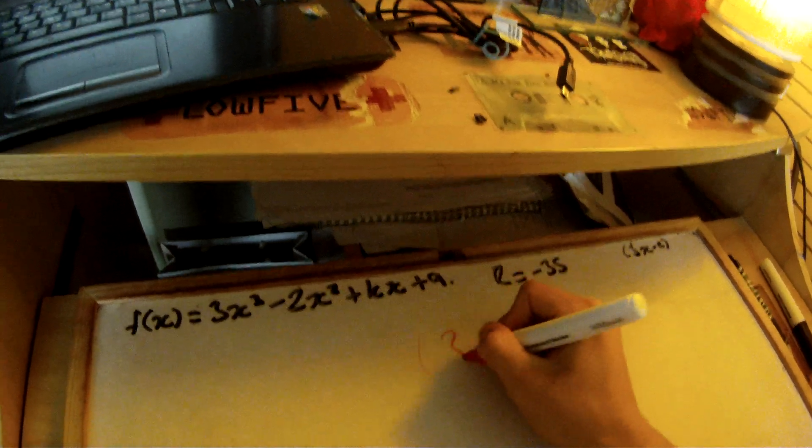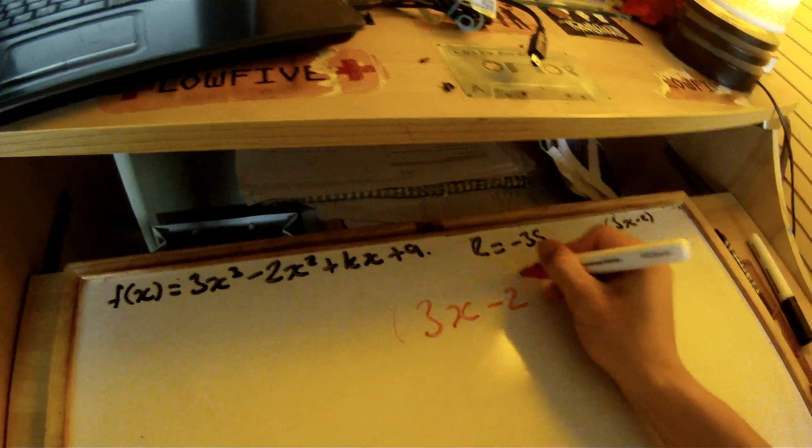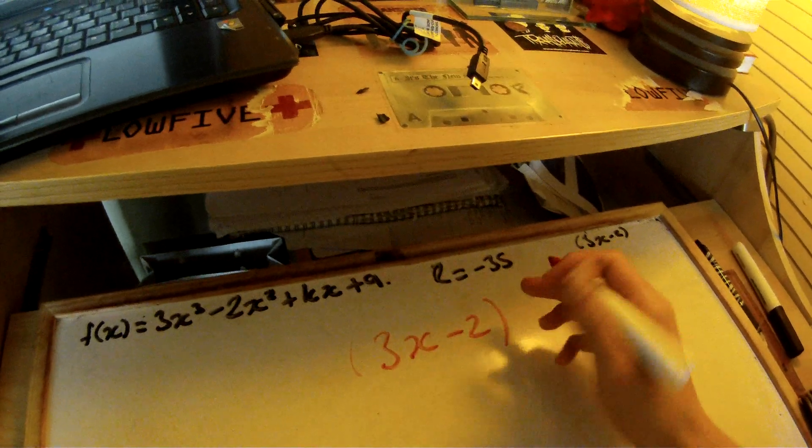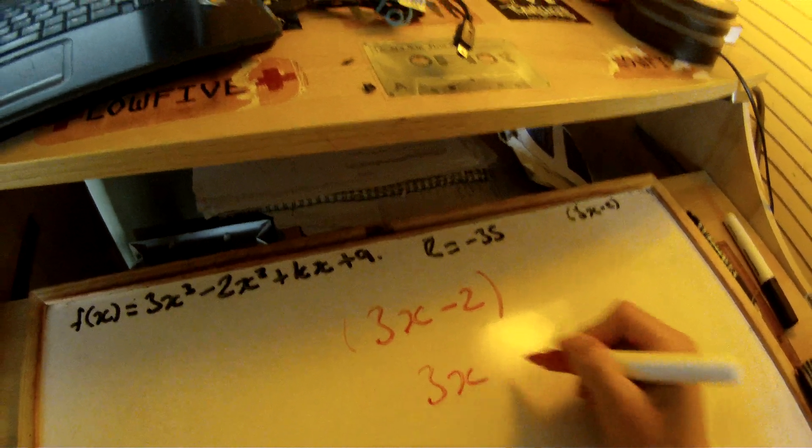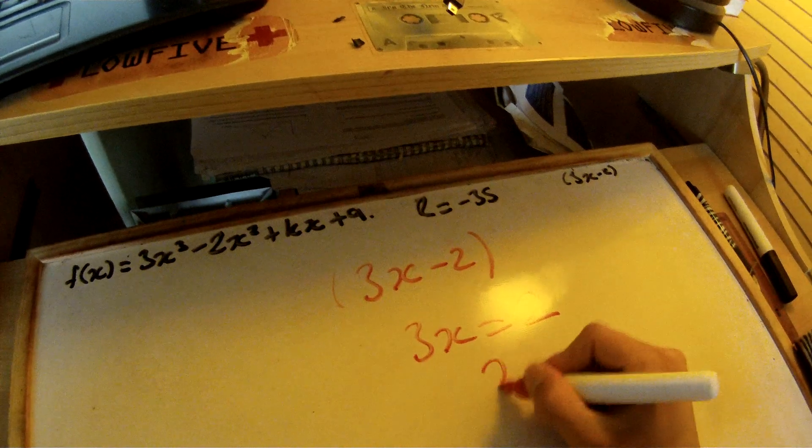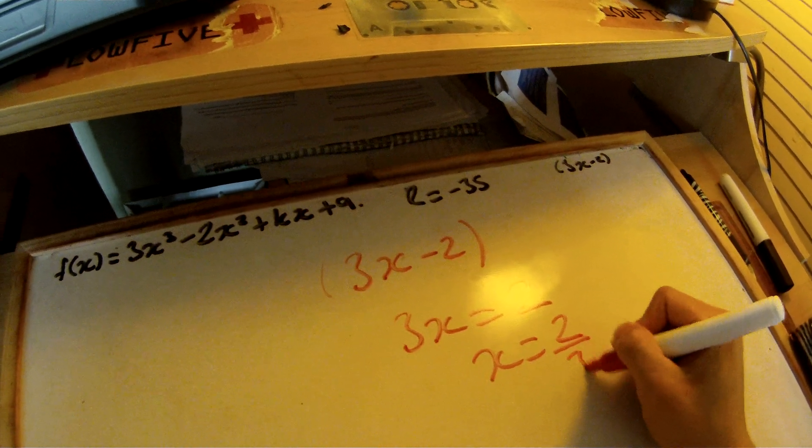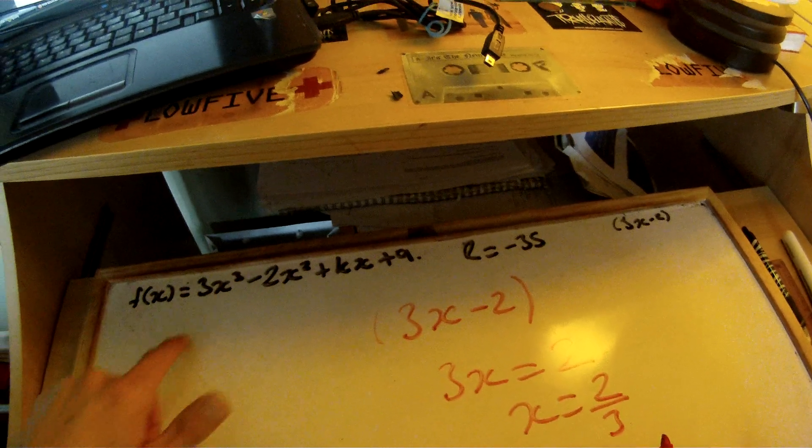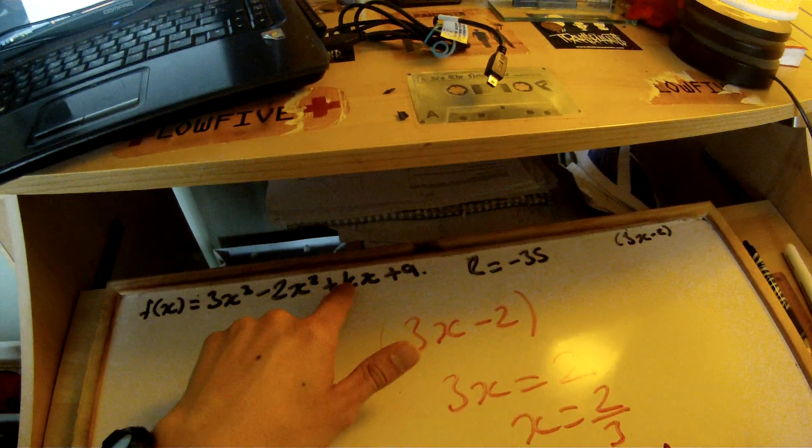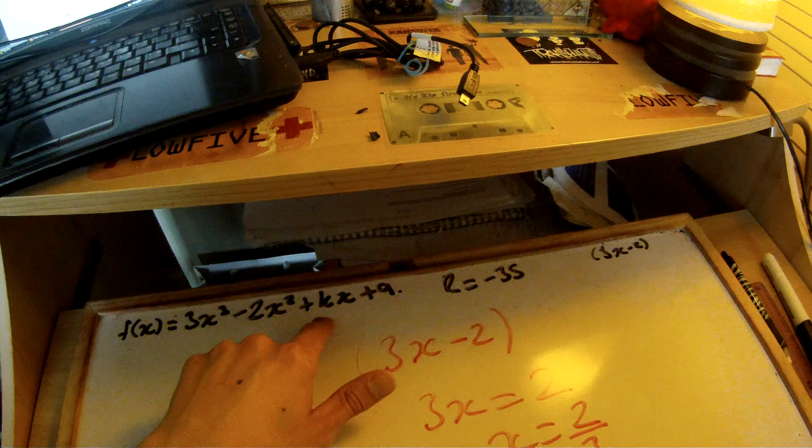First thing you've got to do is find an appropriate value for x. So solve this like a normal equation. x equals 2 thirds. So what you're going to do is place 2 thirds into that equation using the value for k that you got in part A, and find out what the remainder is.